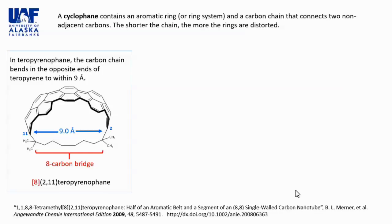A cyclophane contains an aromatic ring or ring system and a carbon chain that connects two non-adjacent carbons. The shorter the chain, the more the rings are distorted.